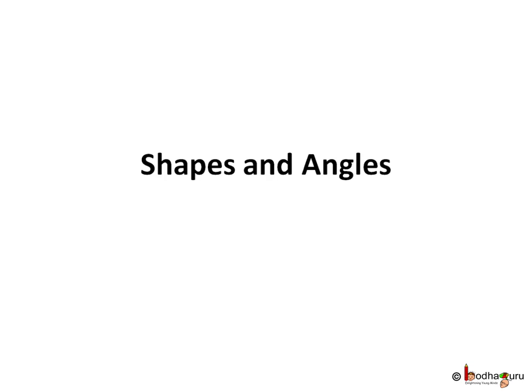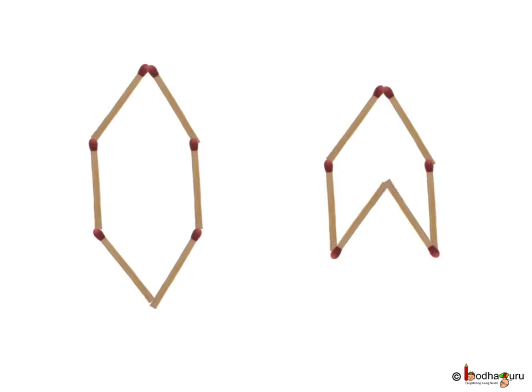Shapes and Angles. Kushi has 6 sticks and she is making shapes with it. Look, she could make many shapes with 6 sticks. All the shapes are closed shapes and have 6 sides.